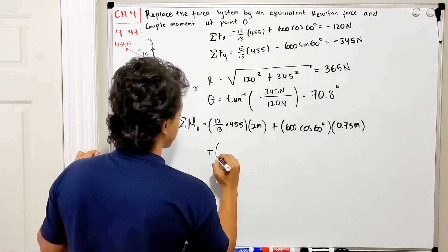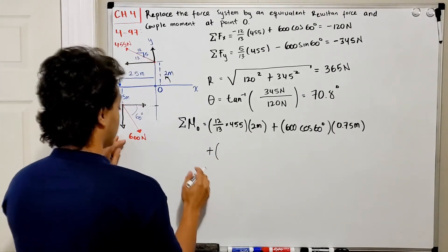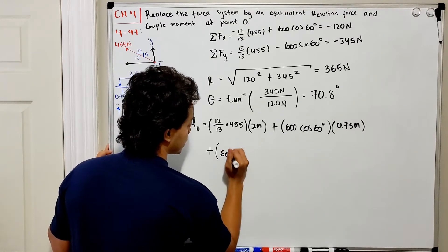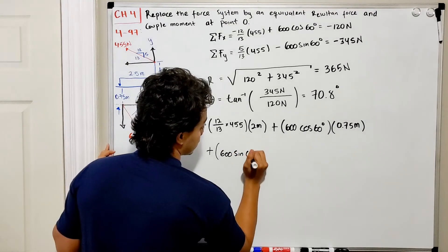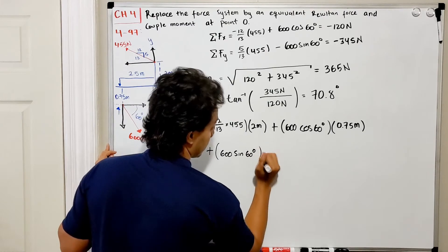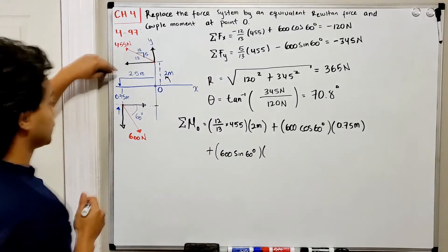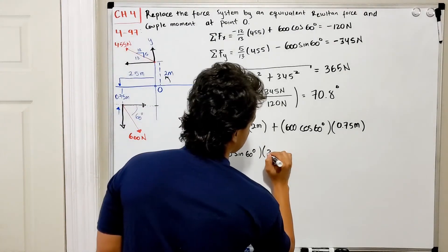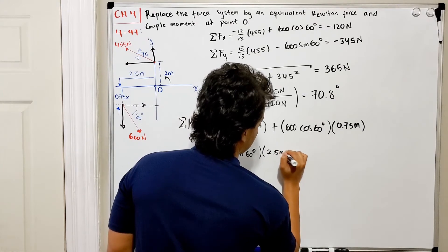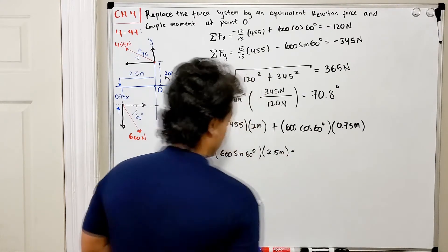So we do plus, then the force magnitude in the y direction, which is 600 sine of 60 degrees, multiplied by the distance of 2.5 meters.